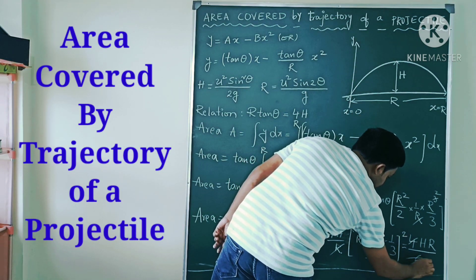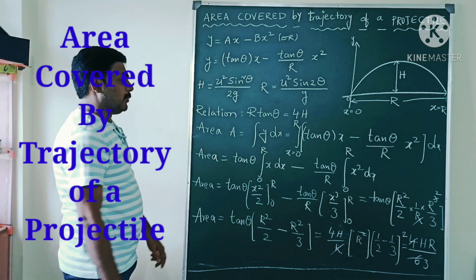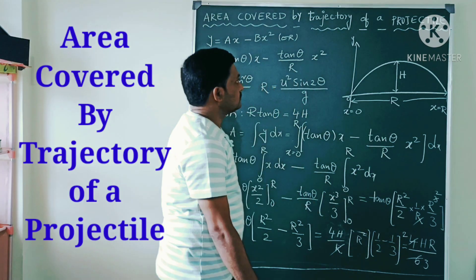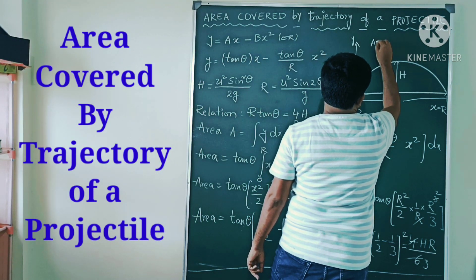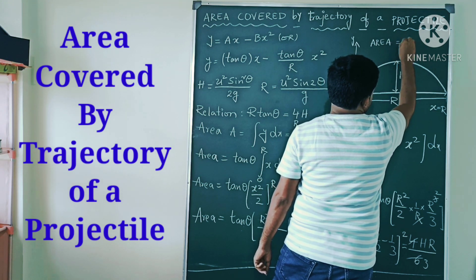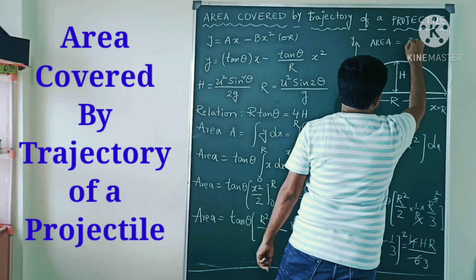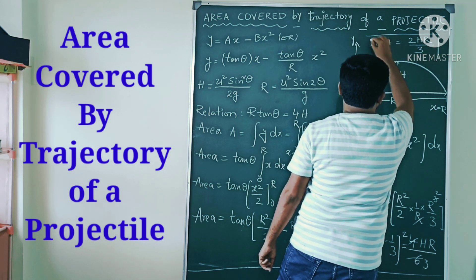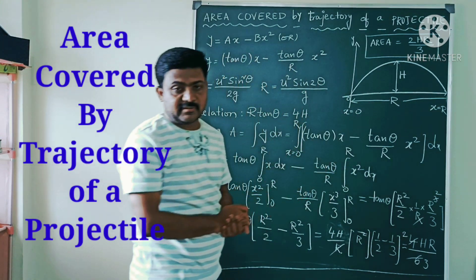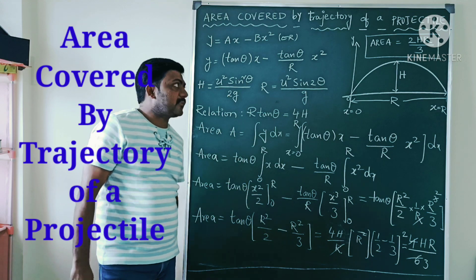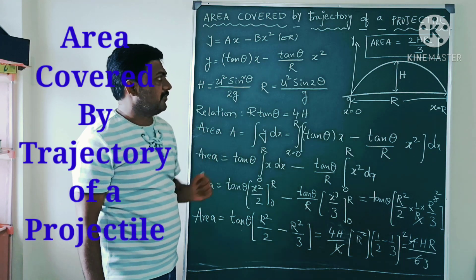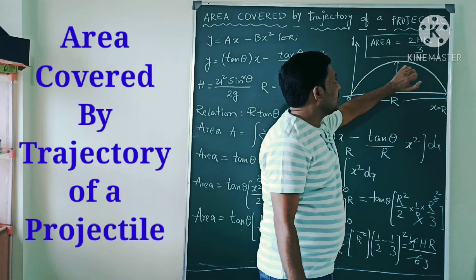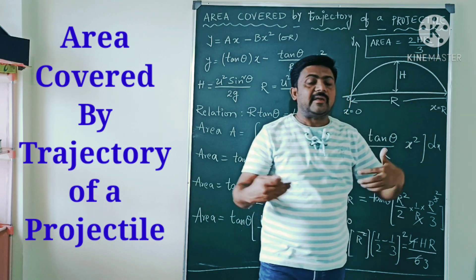Simplifying 4hR/6 by cancelling common factors of 2, the final area equation is: Area = 2hR/3. This is the area of projectile equation, where h and R values are directly known.